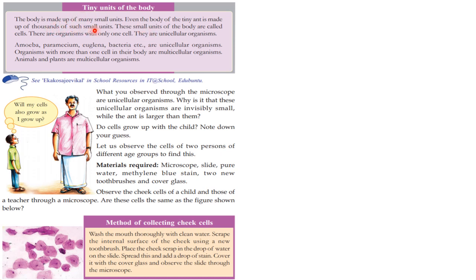The body is made up of many small units. Even the body of the tiny hand is made up of thousands of such small units. The small units of body are called cells. There are organisms with only one cell; they are unicellular organisms.